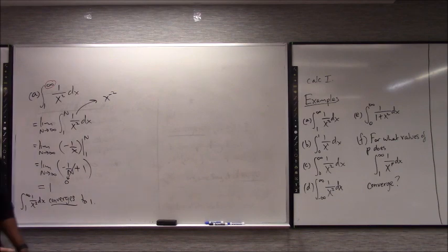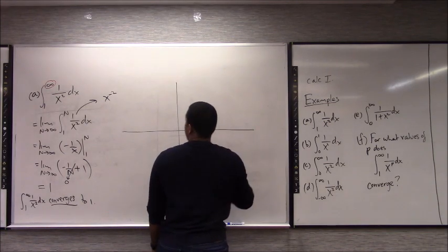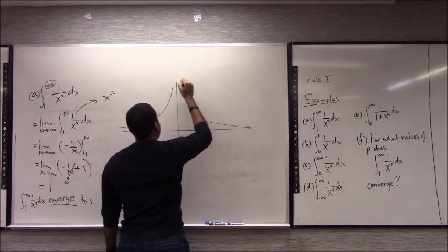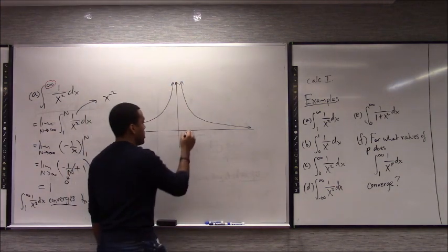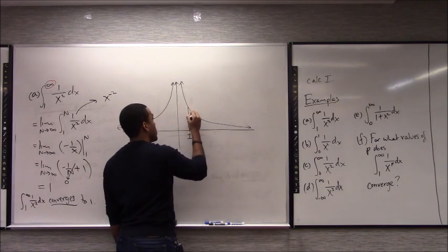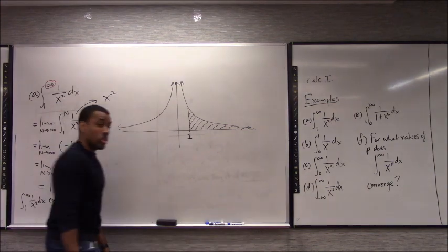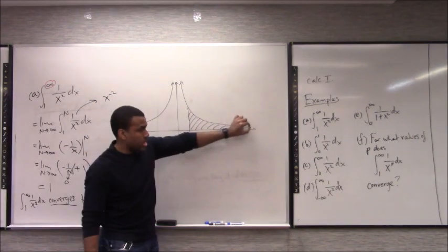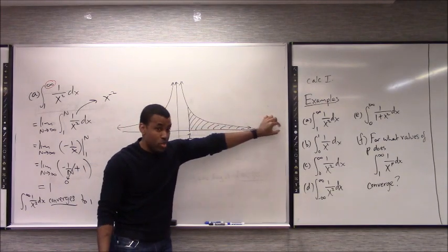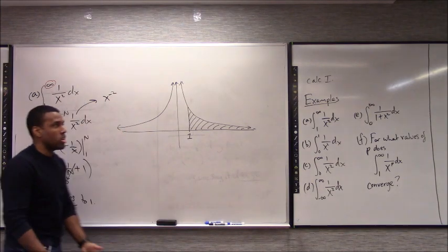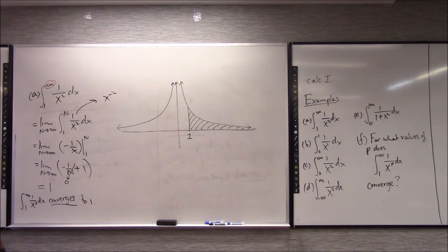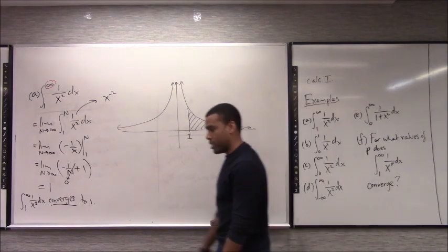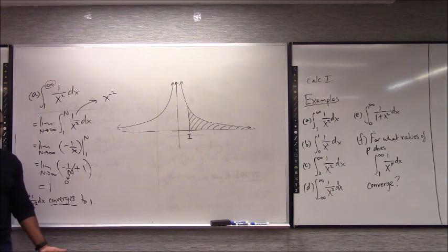In terms of interpretation: if you look at the function 1/x², we're saying that if you start at 1 and go off to infinity, the area under that curve — as strange as it might sound — is actually 1. Notice that this function never actually touches the x-axis, so it's almost like it goes on forever. But it turns out there comes a point where the area is never going to be bigger than 1. The area converges to 1.